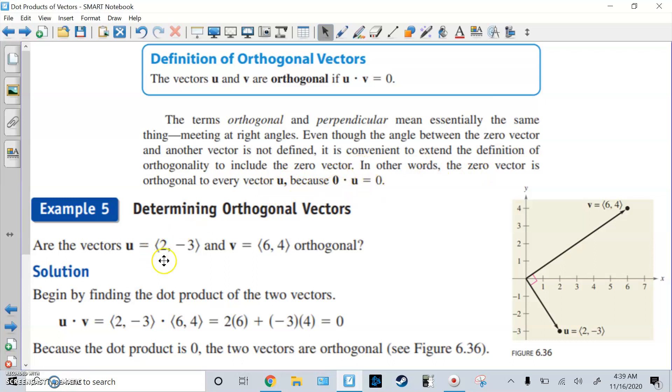So here's an example. Are these two vectors orthogonal? Is this 90 degrees? So first, we're going to find the dot product. And we know that's zero. Because the dot product is zero, these are orthogonal. So this does make a 90 degree angle.